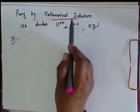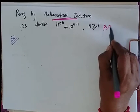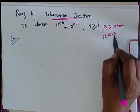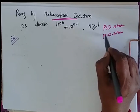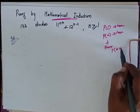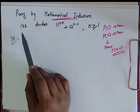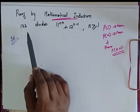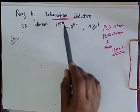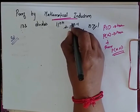Proof by mathematical induction. Whenever we use mathematical induction, we have to prove that P(1) is true, then assume P(k) is true, and then prove for P(k+1). Now we go for the solution where the problem is: 133 divides 11^(n+1) + 12^(2n-1).